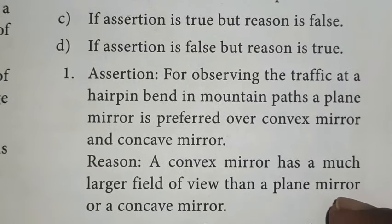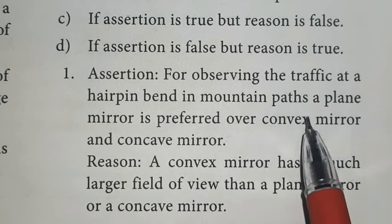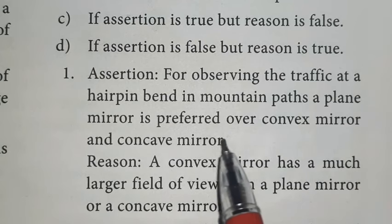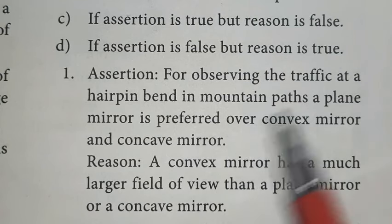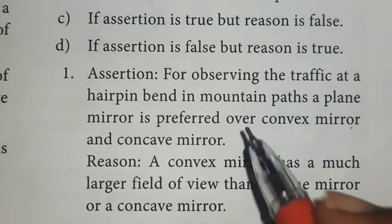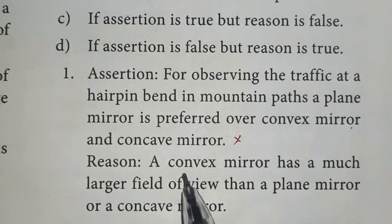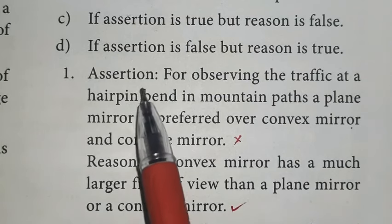First assertion and reason. For observing the traffic at a hairpin bend in mountain paths, a plane mirror is preferred over convex mirror and concave mirror. If you have to say, the right answer is convex mirror, not a plane mirror. So, you will say this is false. Next, reason is convex mirror has a much larger field of view than a plane mirror or a concave mirror. Yes, this is correct. Then, assertion is wrong.